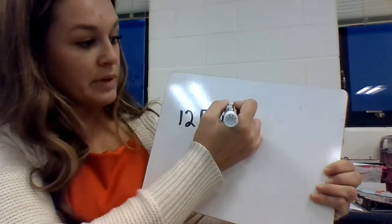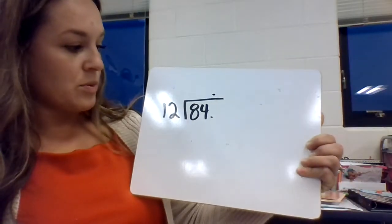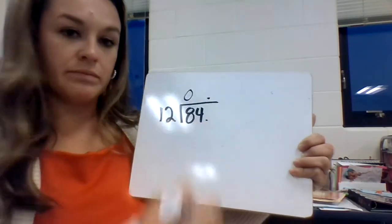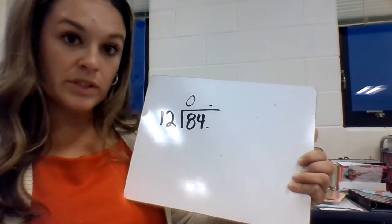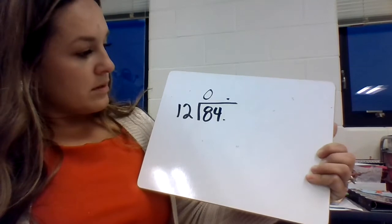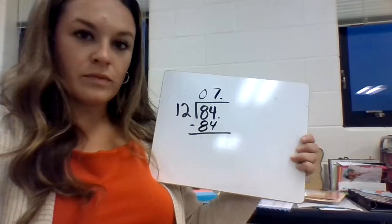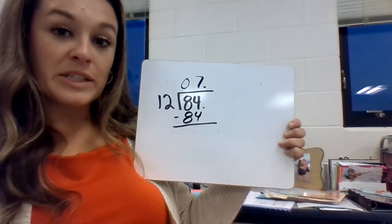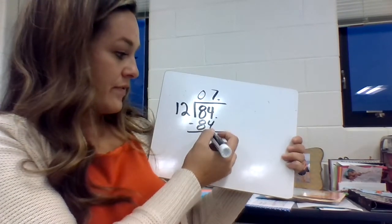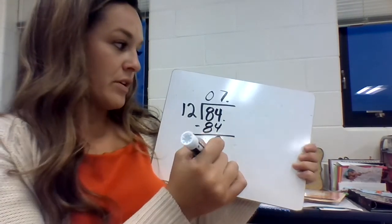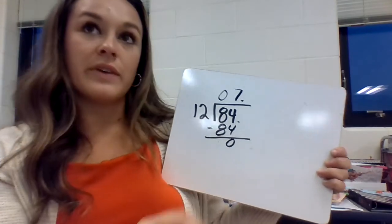I'm going to go ahead and bring my decimal up in case I need to add zeros. How many times does 12 go into 8? It doesn't. How many times does 12 go into 84? Skip count by 12's. 12 goes into 84, 7 times. 7 times 12 is 84. There's no more numbers left over. So 84 divided by 12 is 7.